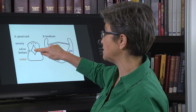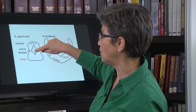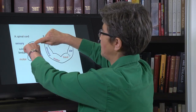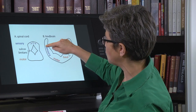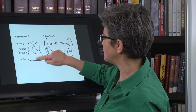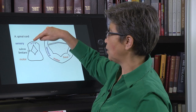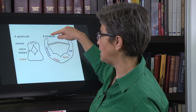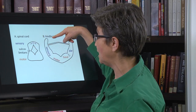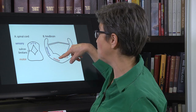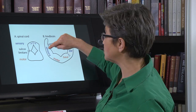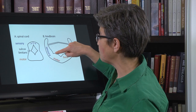The spinal cord is continuous with the hindbrain. As you go up through the spinal cord and into the hindbrain, this lumen progressively becomes more dorsal until it actually opens up. So in the spinal cord, sensory is dorsal and motor is ventral. In the hindbrain, sensory is lateral and motor is medial.